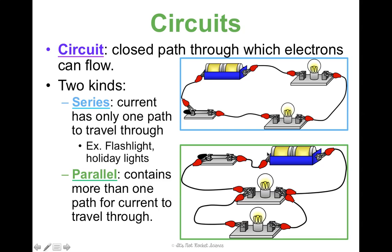A little bit more complicated is the parallel circuit. This contains more than one path for current to travel through. We've got our switch — it's closed, thus the light bulbs are on. Current can go through this pathway, and then it can also go through this pathway — so that's what makes it parallel. This is how your house or apartment is probably wired: one person can be blow-drying their hair in the bathroom, another can be using the dishwasher in the kitchen, and they're not affecting each other because they're wired separately. This is how schools tend to be wired as well.